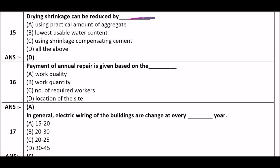Next question: Drying shrinkage can be reduced by — option A: using a practical amount of aggregate, option B: lowest usable water content, option C: using shrinkage-compensating cement, option D: all of the above. The right answer is option D — all of the above. Using a practical amount of aggregate, lowest usable water content, and shrinkage-compensating cement all help reduce drying shrinkage.